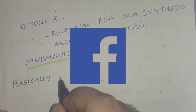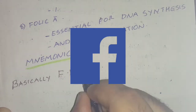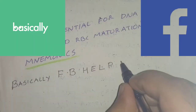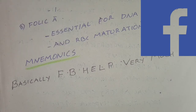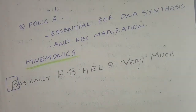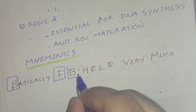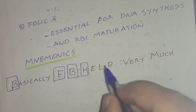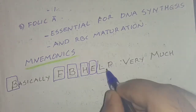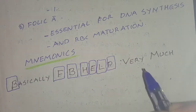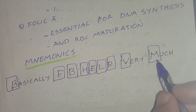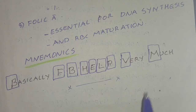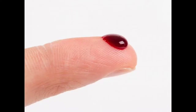For the mnemonic, think of Facebook. B stands for BPA (burst promoting activity), F for folic acid, B for vitamin B12, H for hormone, E for EPO, L for lipid, P for protein, V for vitamin, M for metals. That's all for the topic of factors regulating erythropoiesis.